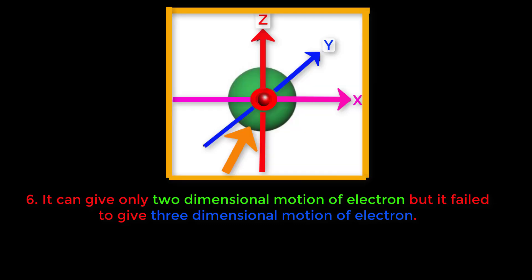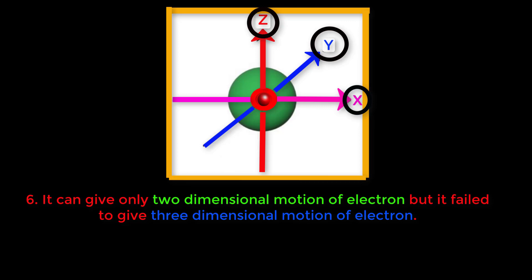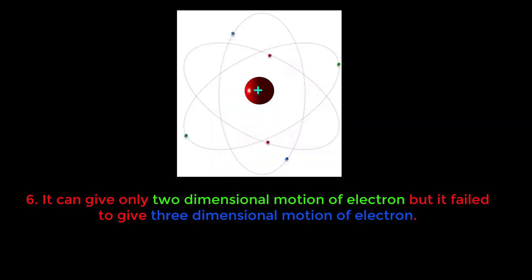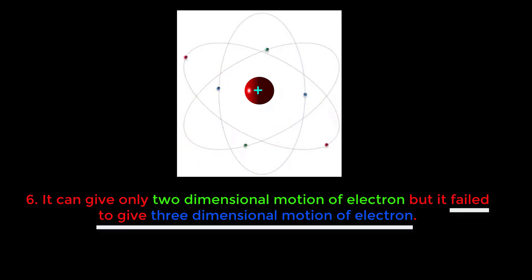Now look at this picture. This is a sphere and this is the nucleus. This sphere has an x-axis, y-axis, and z-axis — that means it is three-dimensional. Actually, the motion of the electron around the nucleus is spherical or three-dimensional. The electron revolves in this three-dimensional way. That means Bohr's theory failed to give the three-dimensional motion of the electron. Thanks a lot for watching this tutorial.